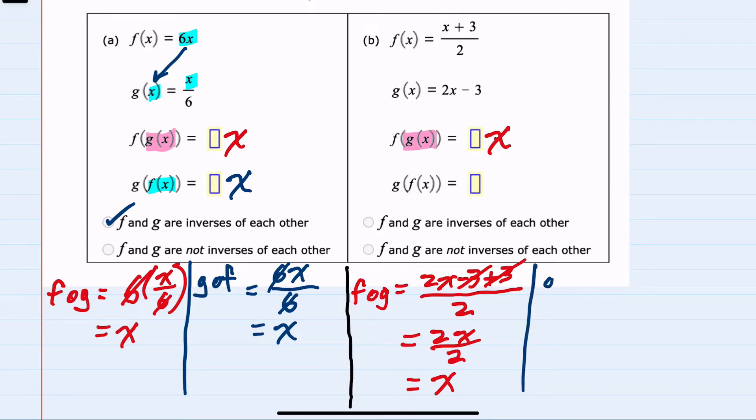Moving to the second question, g of f of x, we are taking the f of x function here and plugging it in to g. So g will now be 2 times x, but x is replaced with the f function, x plus 3 over 2, minus 3. Here we can again simplify. The 2's are going to cancel in this multiplication and division, leaving me with the x plus 3 and a minus 3 on the outside, which again simplifies to x. So our g of f of x is also x.